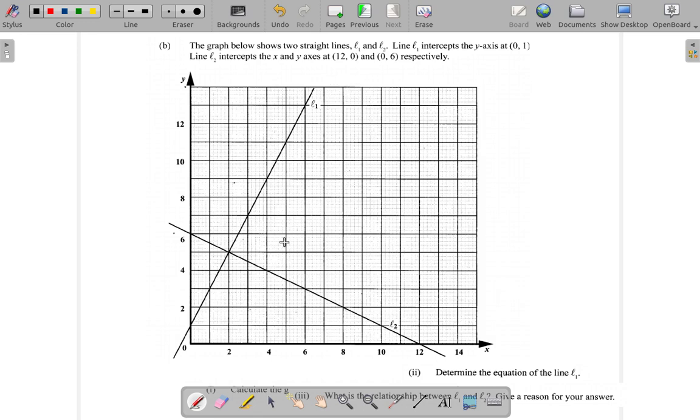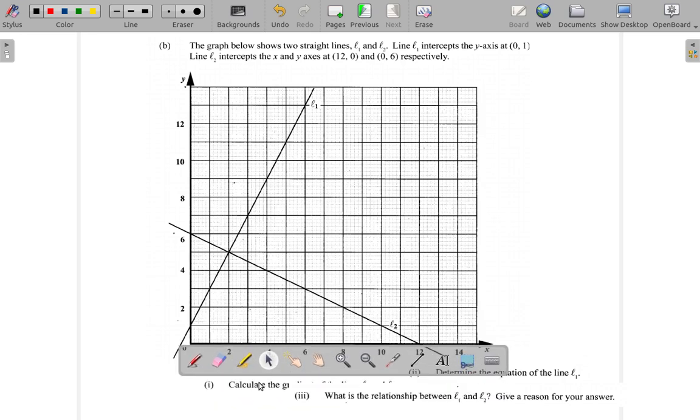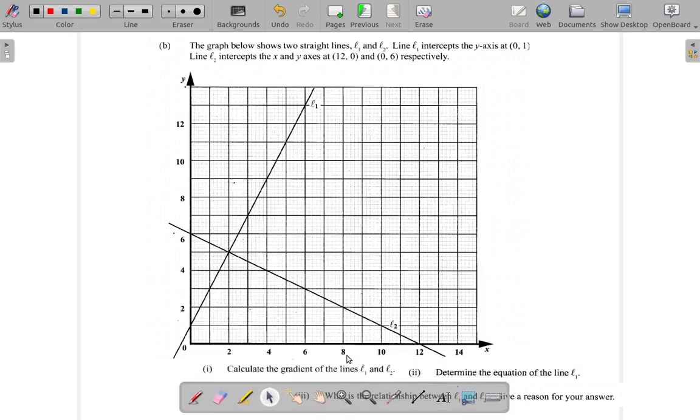The first question: Calculate the gradient of L1 and L2. We want the gradient, that means the slope. We know it's going to be a positive gradient because it runs from lower left to upper right. As you go in the positive direction to the right along the x-axis, the line rises, so the gradient is positive.